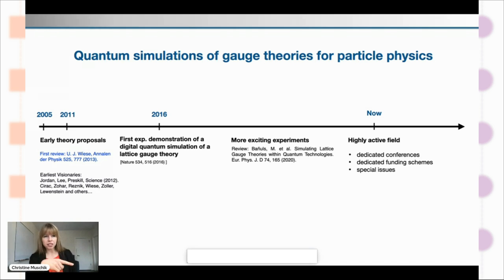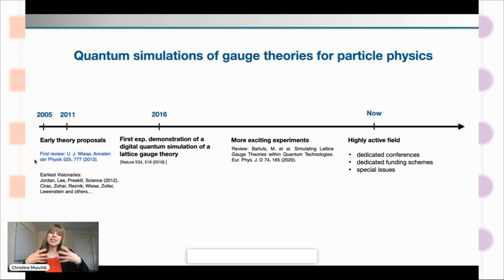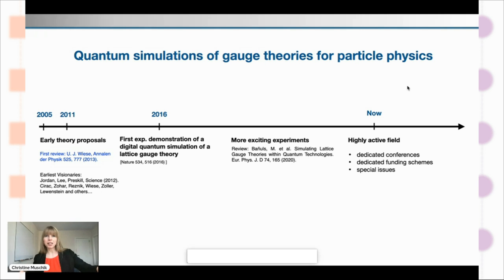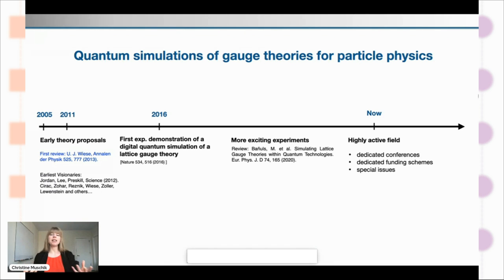If you look on the very left, we have 2005 — early, very visionary theory proposals where people were thinking about how to use quantum technology for these specific problems in particle physics. Then fast forward to 2016 — that was the first experimental demonstration of a digital quantum simulation of lattice gauge theory. Since this first experimental demonstration there have been many more exciting experiments on very different platforms — the field almost exploded. Now it's a highly active field with dedicated conferences, dedicated funding schemes, and special issues.